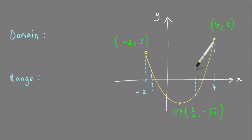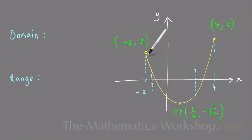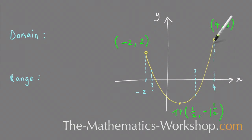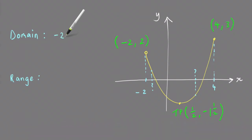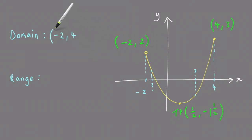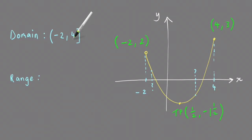Anywhere I pick a point on that curve, the x value is going to be between minus 2 and 4, so the domain is from minus 2 to 4. Because this is an open circle, minus 2 is not included, so you use a round bracket; and because 4 is included, you use a square bracket. So the set of x values is from minus 2 non-inclusive to 4 inclusive.